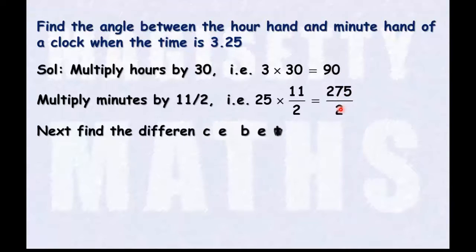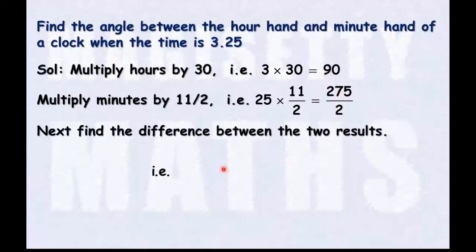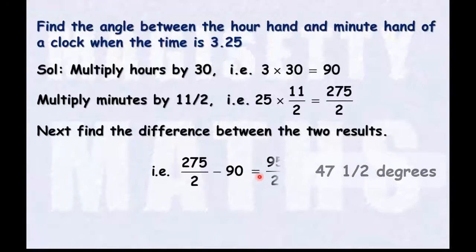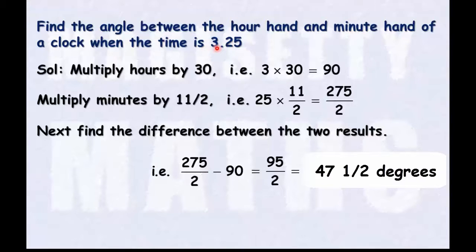And then, just find the difference of these 2 results. That is, 275/2 minus 90, that gives 95/2, which equals 47.5 degrees. So this is the angle between the hour hand and minute hand of a clock when the time is 3 hours 25 minutes.